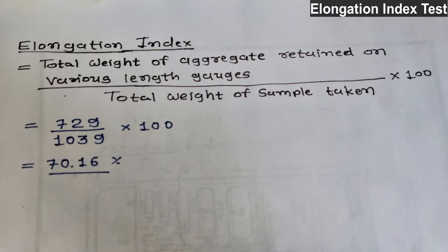Elongation index equals the total weight of aggregate retained on various length gauges divided by the total weight of sample, multiplied by 100. Here, we get total retained aggregate of 729 grams, divided by total sample weight of 1039 grams, multiplied by 100, giving an elongation index of 17.60%. Generally, the presence of elongated particles in excess of 15% is considered undesirable. Here we get 17.16%, so we cannot use this aggregate for making concrete. Thanks for watching — please subscribe to my channel.